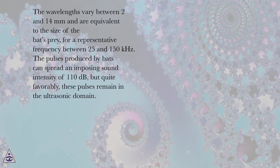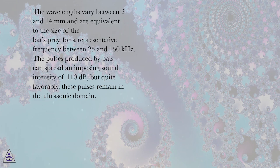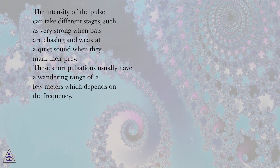The pulses produced by bats can spread an imposing sound intensity of 110 dB, but quite favorably, these pulses remain in the ultrasonic domain. The intensity of the pulse can take different stages, such as very strong when bats are chasing and weak at a quiet sound when they mark their prey.